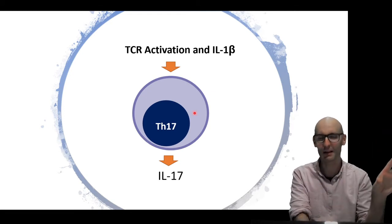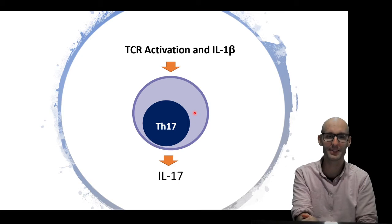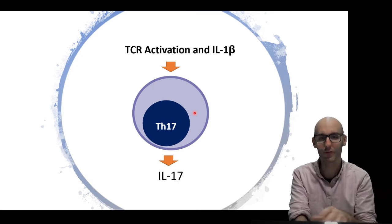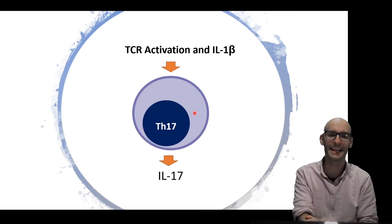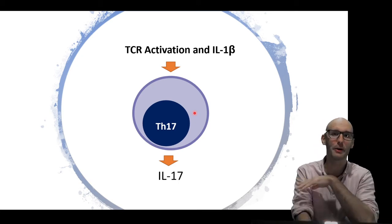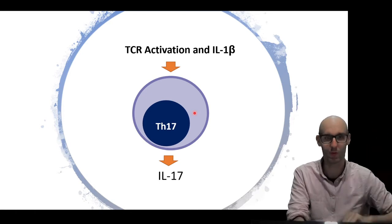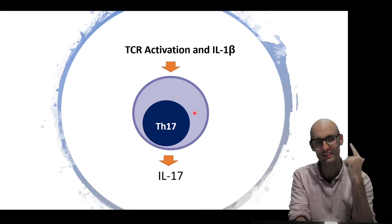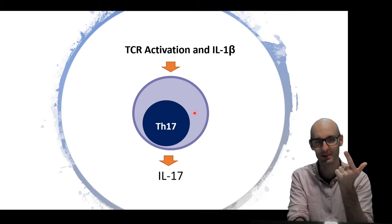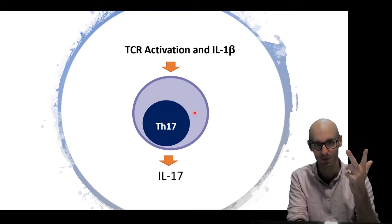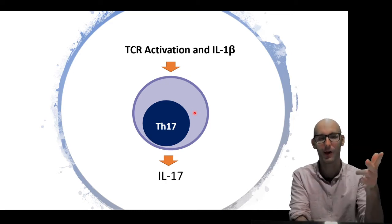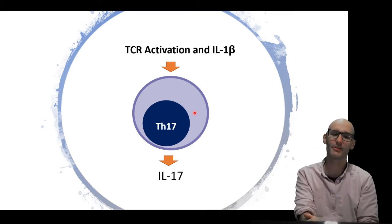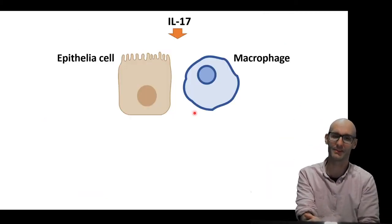It releases a couple of other cytokines — IL-22 being a famous one — but we're going to focus on IL-17 here because there are a million cytokines and we can't learn them all. So: T cell receptor activation, IL-1 receptor activation, we end up with a T helper cell 17, and it's going to release IL-17.